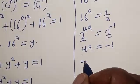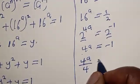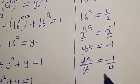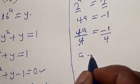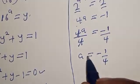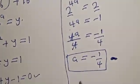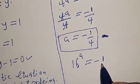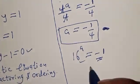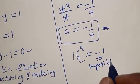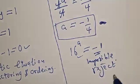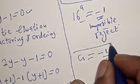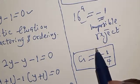Dividing both sides by 4: a is equal to minus 1 over 4. For the second case, 16 raised to power a is equal to minus 1. But we know that 16 raised to power a cannot take a negative value, so this is impossible and we reject it. The only true solution is a is equal to minus 1 over 4. That is our final answer. If you like the class, please like, share, comment and subscribe. Thank you.